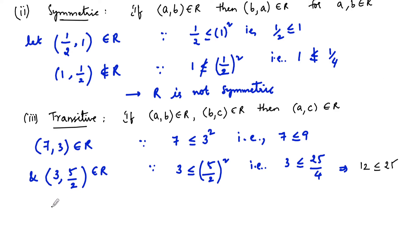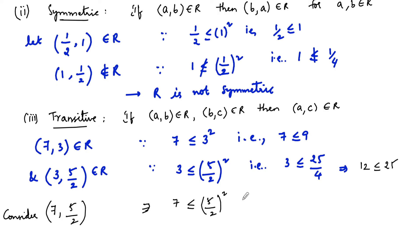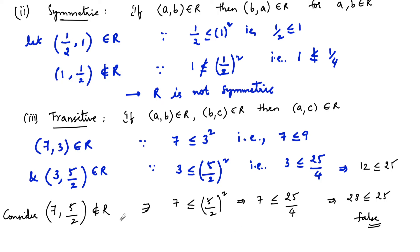Consider (7, 5/2): we check whether 7 ≤ (5/2)² = 25/4. This implies 7×4 = 28 ≤ 25, which is false. So (7, 5/2) does not belong to R. Since (7, 3) and (3, 5/2) are in the relation but (7, 5/2) is not, we can conclude that the relation R is not transitive.